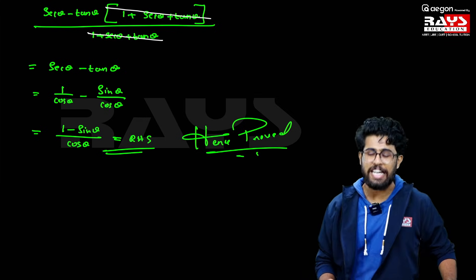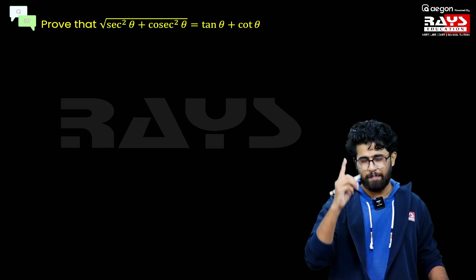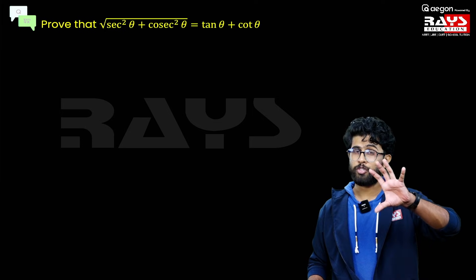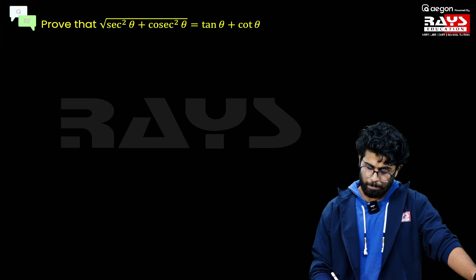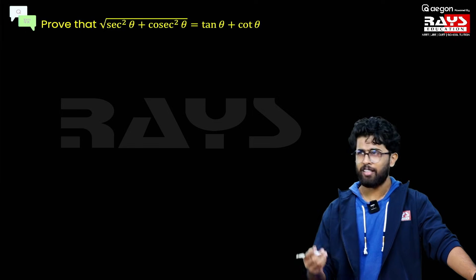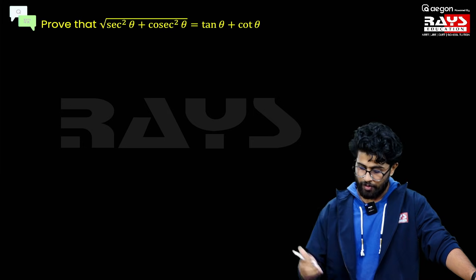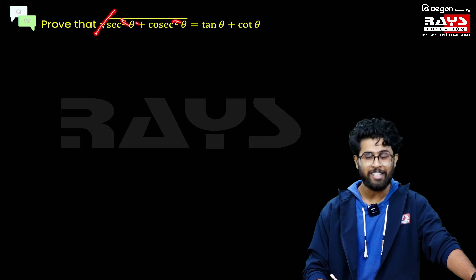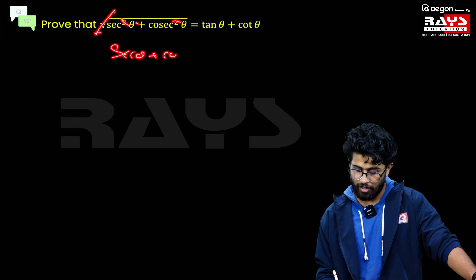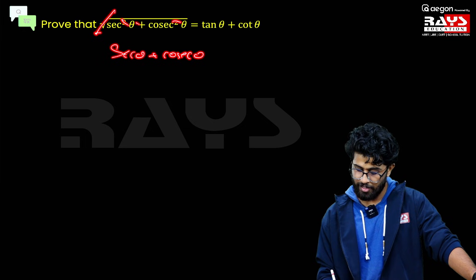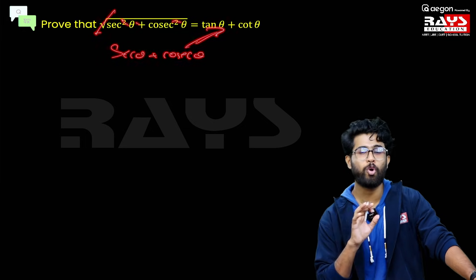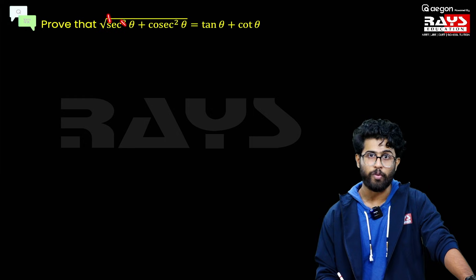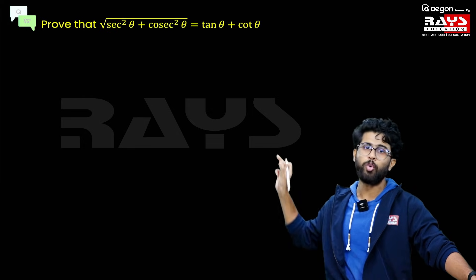Moving to the next question without wasting time — it's also a very important question asked in previous year board exams. At first look it seems very easy and you might want to cancel the squares and the square root directly, but please don't make that mistake. We cannot cancel the squares and the root here because the squared terms are divided into two separate terms inside the root.